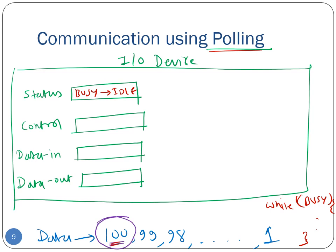Once the device is idle, the device driver can proceed. The CPU writes the 'write' command in the control register, and the data to write — value 100 — is written in the data-out register. Once the CPU has set up the control register and data-out register, it will change the status of the device from idle to 'command ready,' meaning that the parameters needed for executing this task have been set up.